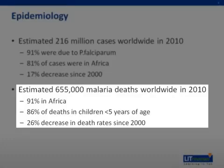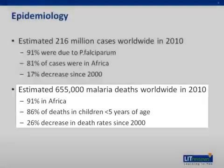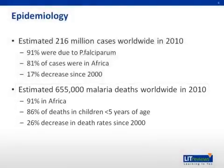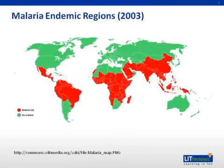This map shows the geographic regions in which malaria is endemic. These regions include most of Central and South America, Africa, the Middle East, and Southeast Asia.